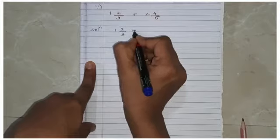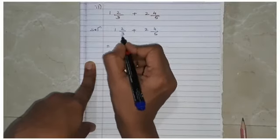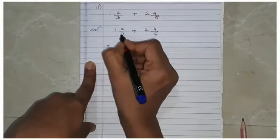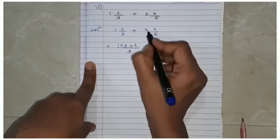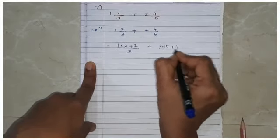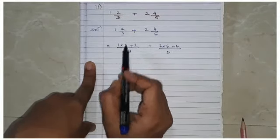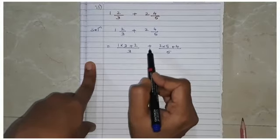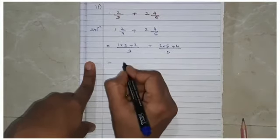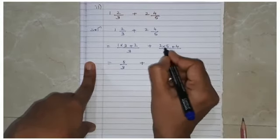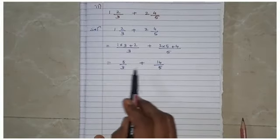Converting: 1²/₃ = (1 × 3 + 2)/3 = 5/3, and 2⁴/₅ = (2 × 5 + 4)/5 = 14/5. Now we have 5/3 + 14/5. The denominators are not the same, so we cross multiply.